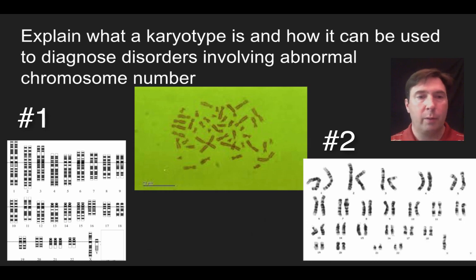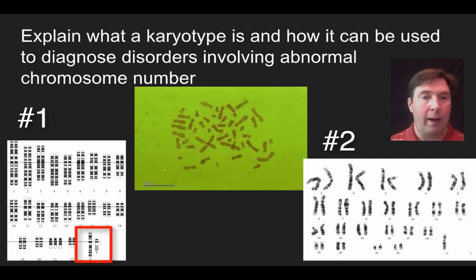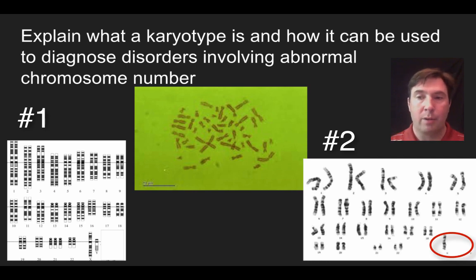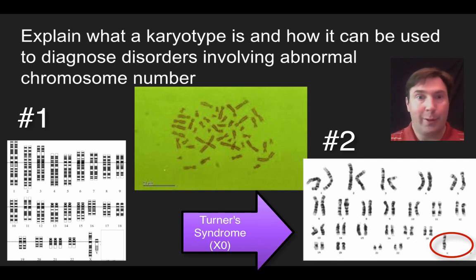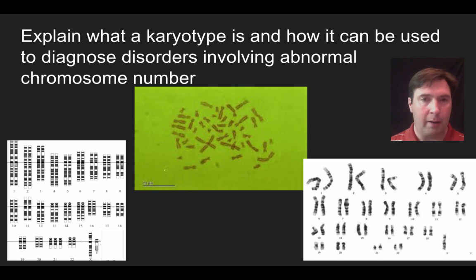Looking at karyotype number one, you should notice it has three number 21 chromosomes — trisomy 21, or Down syndrome. You'll also notice this individual is XY, so this is a boy with Down syndrome. In karyotype number two, there is only one sex chromosome — one X and no Y — so this individual has Turner syndrome. It's also worth noting that no individual has ever been born without an X chromosome; having one is crucial to survival, while a single Y alone is not compatible with life.